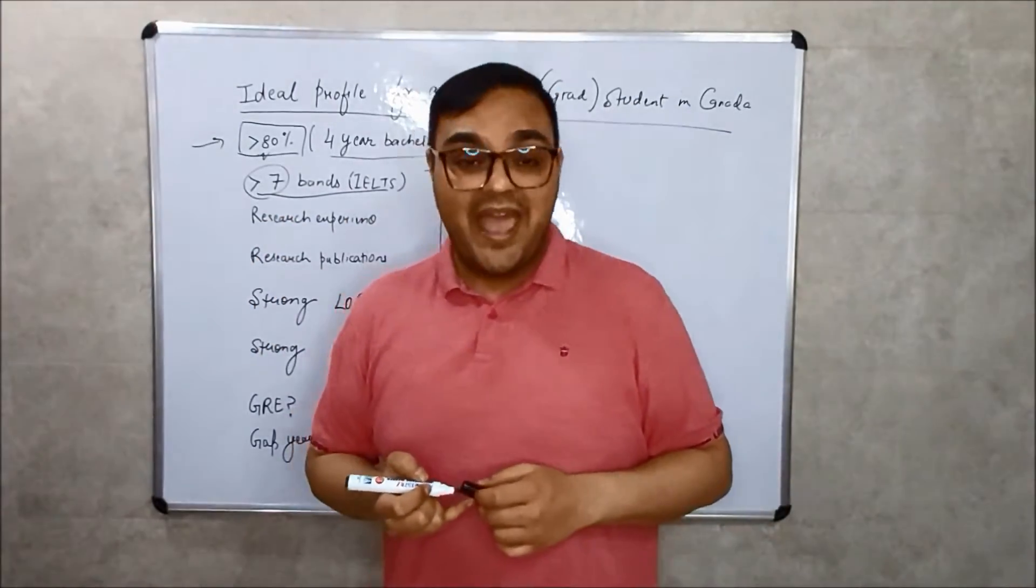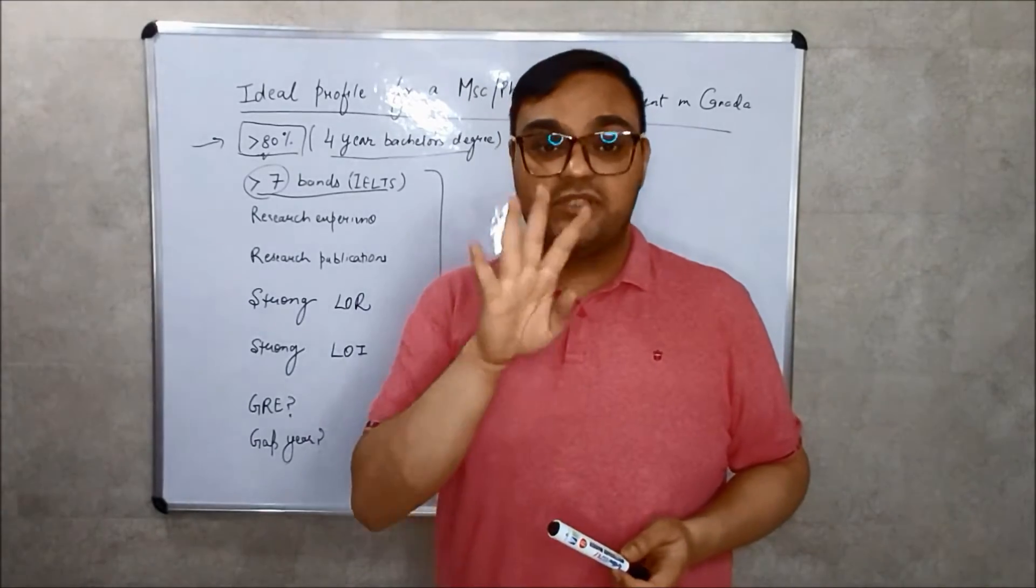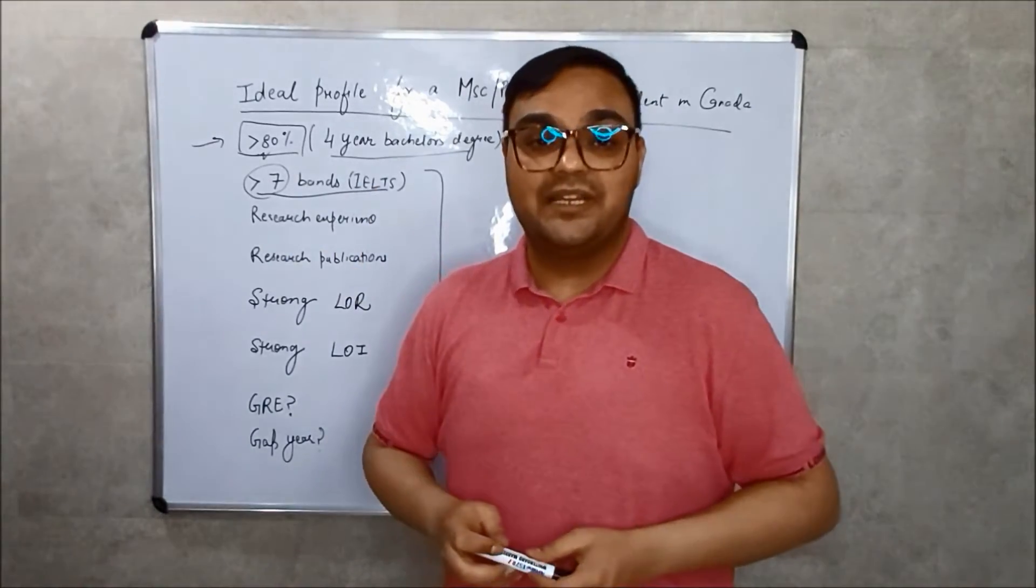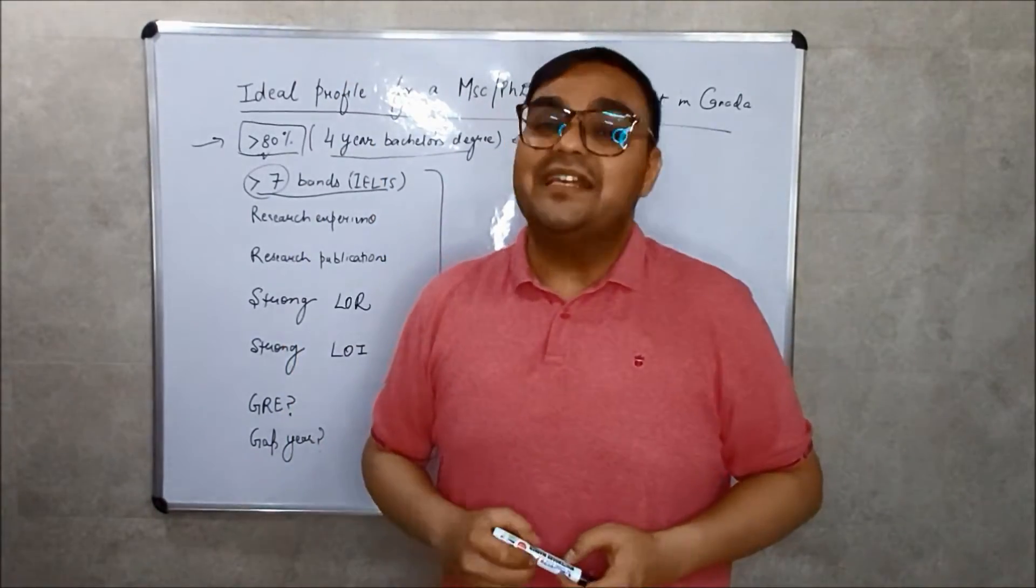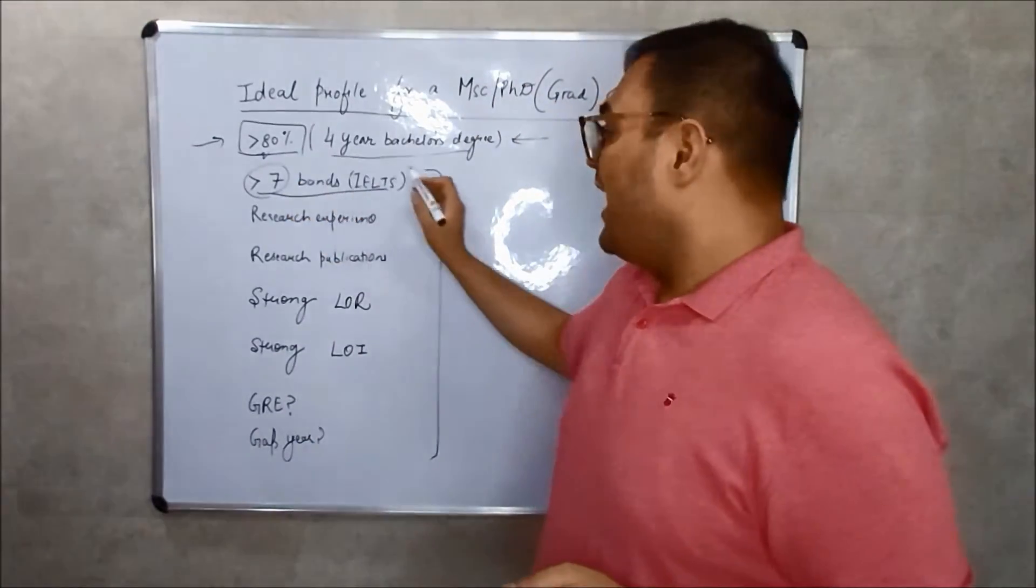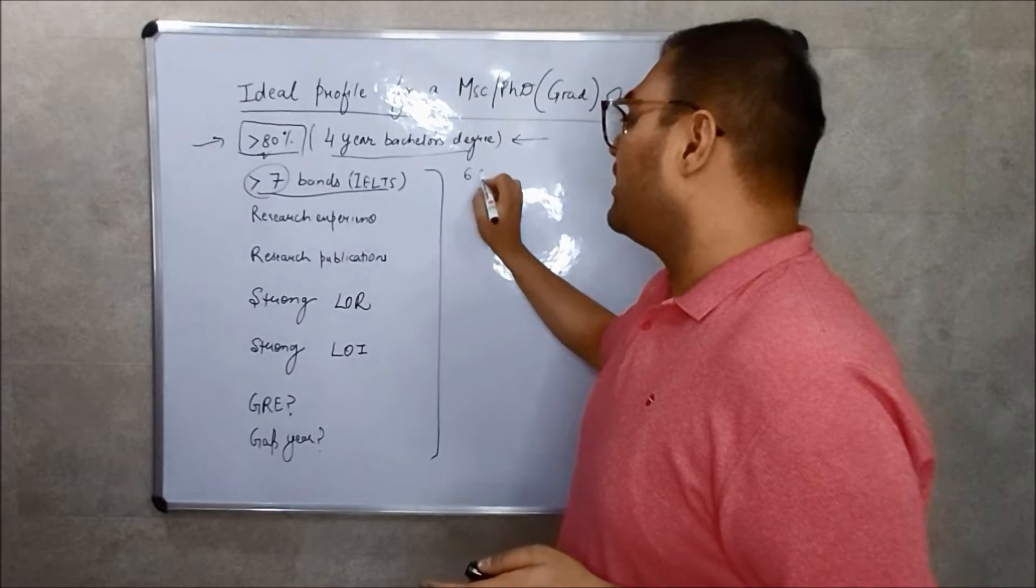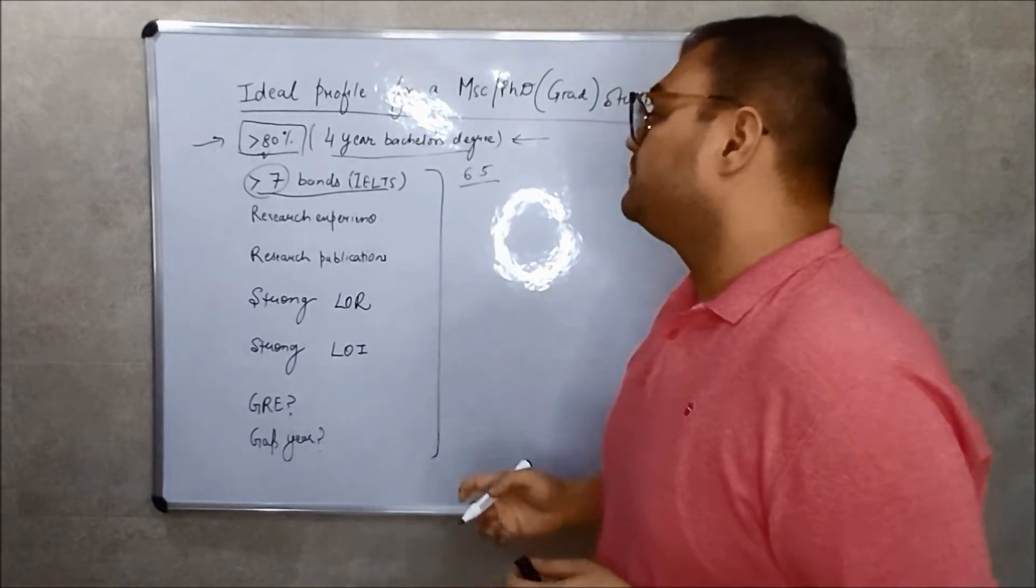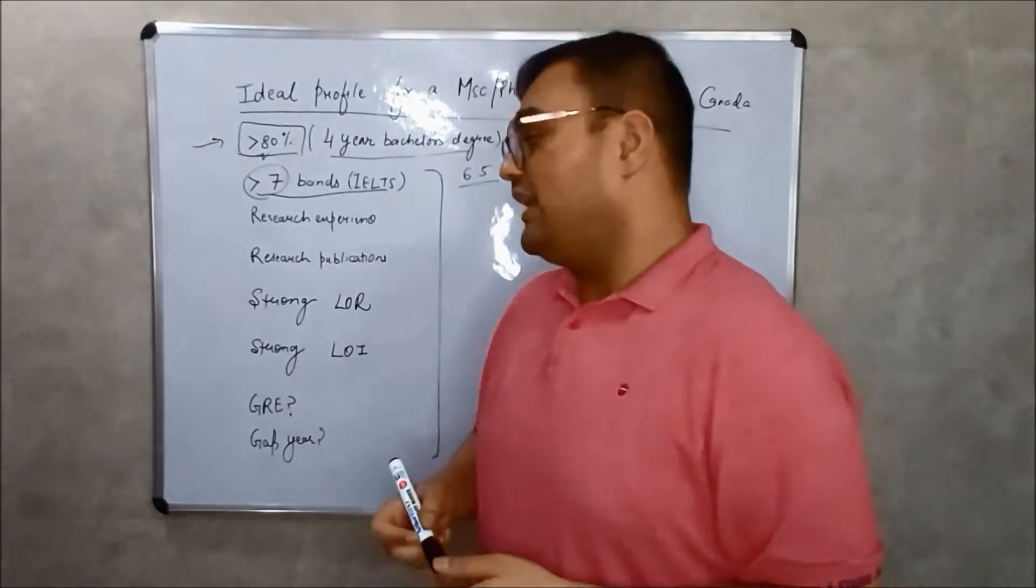And in none of the components—the four components of IELTS—basically you shouldn't score less than 6.5. So 7 is the average and nothing less than 6.5. This is the usual IELTS score which they need.